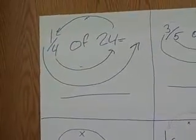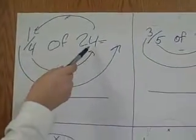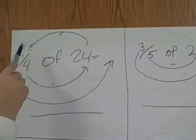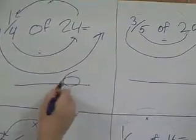We are trying to find out all the answers to all these problems. For the first one, we did 4 divided by 24, which is 6, and then 6 times 1, which equals 6, and that is our answer.